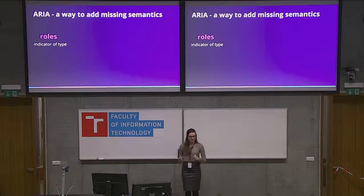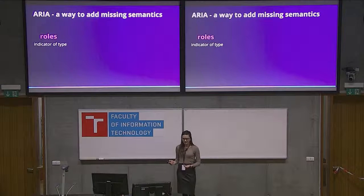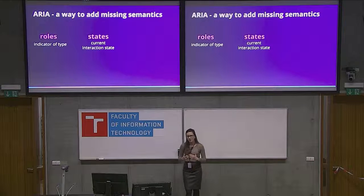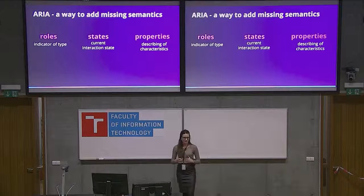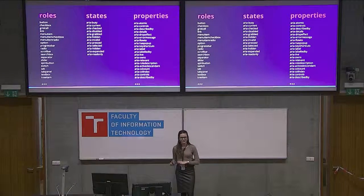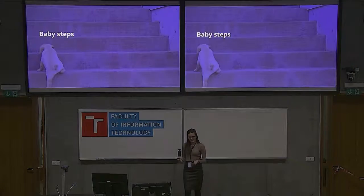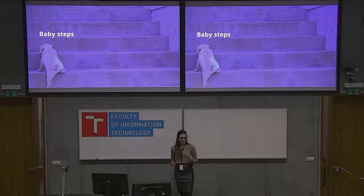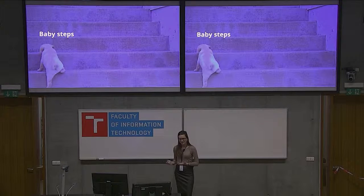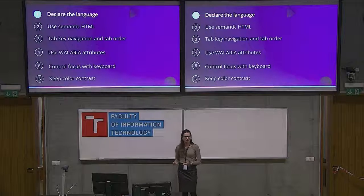There are three types of ARIA attributes: roles like 'menu' and 'menuitem'; states — for example, a combo box can be expanded or collapsed; and properties, which describe characteristics of elements. There are a lot of them, but don't get overwhelmed. We'll go through the core principles with baby steps, which will help you make some initial accessibility improvements.